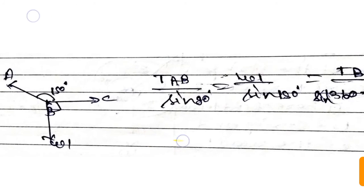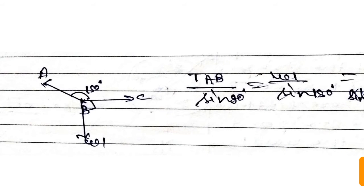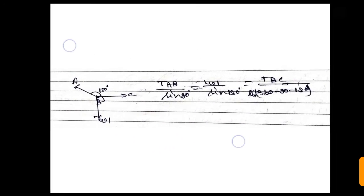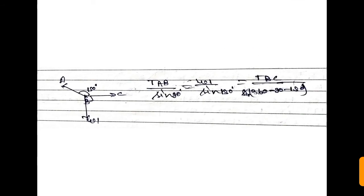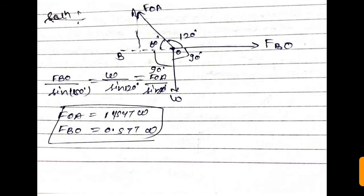We then take the free body diagram of point B and solve it similarly. In this additional question, we can also use Lami's theorem since the forces are concurrent and the angles between them are known. We can easily calculate the forces in BO and OA, since the weight of the system or body is already known.